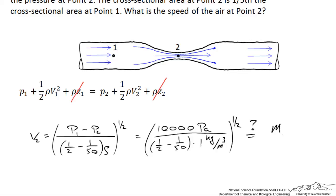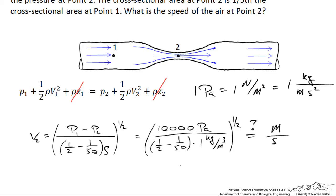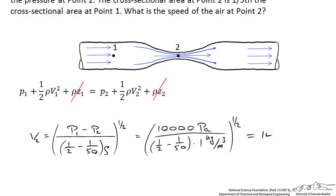We'd expect the result in meters per second. Checking units: 1 pascal equals 1 newton per square meter, which equals 1 kilogram per meter·second². Inside the square root, in the numerator we have kilogram per meter·second² and in the denominator we have density in kilogram per cubic meter, which gives meters² per second². Taking the square root yields meters per second, as expected. Making the final calculation with two significant figures, I get 140 meters per second.